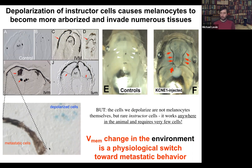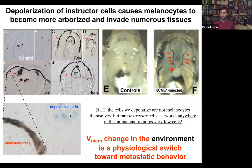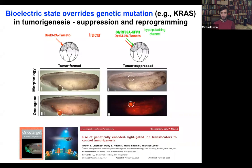It's a voltage change in the environment — there's nothing genetically wrong with these animals, there are no oncogenes, there were no carcinogens, nothing like that. But this voltage change is a physiological switch away from the cooperation of cells toward embryogenesis and towards single-cell behavior. What's cool is that you can override this. If we inject an oncogene and they make these tumors, what you can do is co-inject the channel and force these cells to stay electrically coupled to their neighbors despite what the oncogene is trying to get them to do.